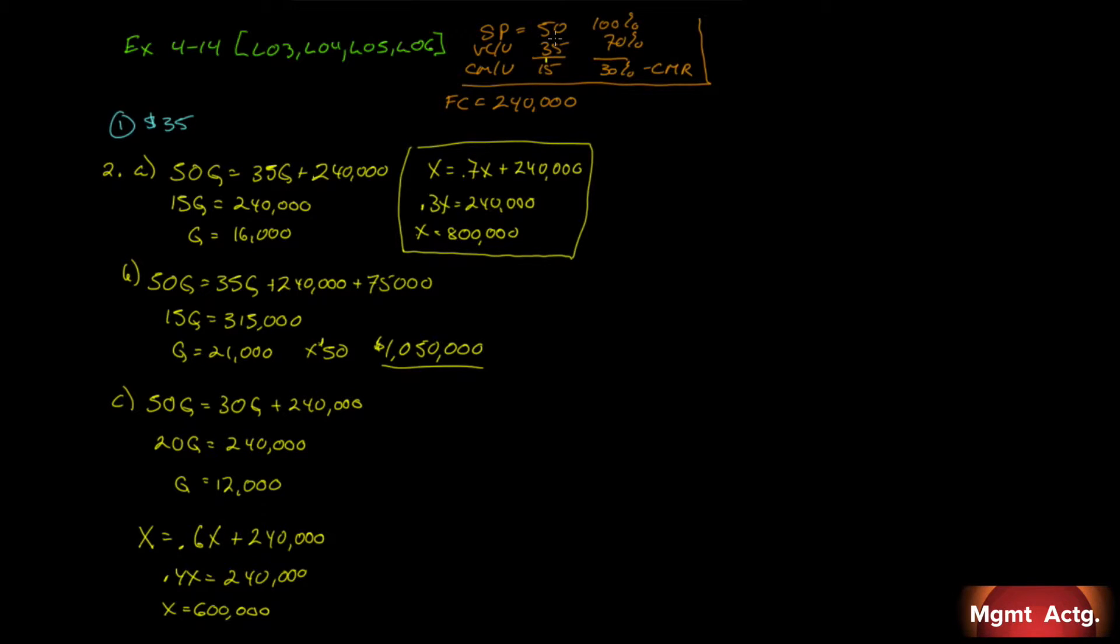Number 3, repeat number 2 above using the formula method. So we've got to start all over again. Number 3A. Break-even point in units and sales. Break-even point in units is our fixed costs over our contribution margin per unit. And that is 240,000 divided by 15 equals $16,000. If it were in sales, break-even is our fixed costs over our contribution margin ratio. That would be the same $240,000, our contribution margin ratio is 0.3 divided by 0.3. That will give us $800,000. Is that consistent? We had 16,000 over here and 800,000. We get the same answer.